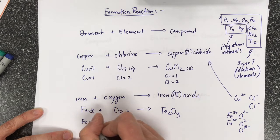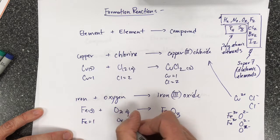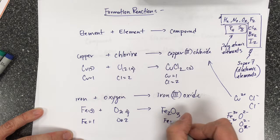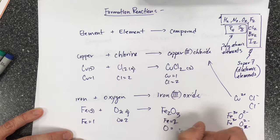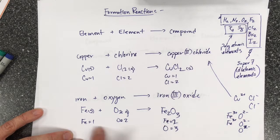Now in this case, I have one iron and two oxygens in the reactants. I have two irons and three oxygens in the product. So these are not equal values.